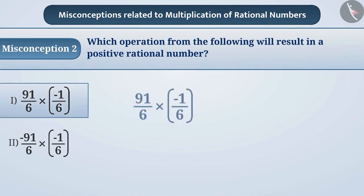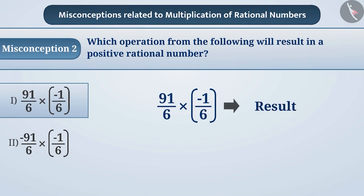Ignoring the symbol while multiplying two rational numbers makes some simple mistakes, as some children understand that the sign of the first number is given in the result. They see that the first number in option 1 is positive, so the result of that operation is also assumed to be positive. For this reason, they give the answer as option 1.